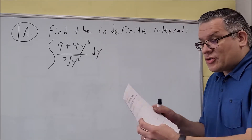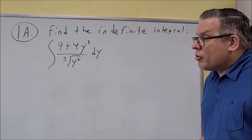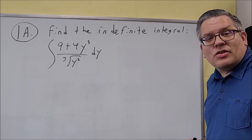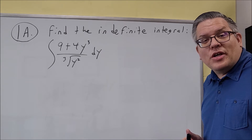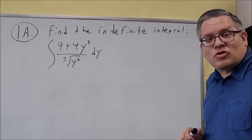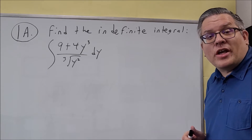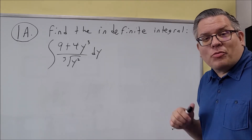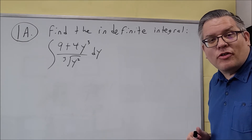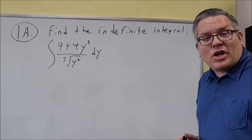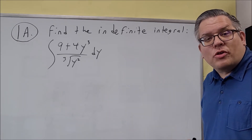We're going to go through the test 4 sample and we're going to be doing all the version A's throughout. You want to make sure you also do version B as well, since the questions on the test will be similar to either one of these versions. At the end of the blank sample test is a formula sheet, and you'll be allowed to use that during the test — that's the same one that you'll be provided with for the actual exam. It has all of your antiderivative formulas on it.